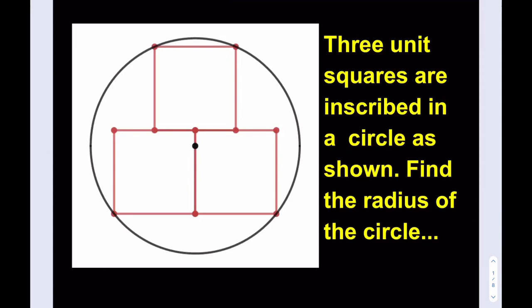Hello everyone. In this video, we're going to be solving a geometry puzzle, which is really cool. Three unit squares are inscribed in a circle as shown. Find the radius of the circle.